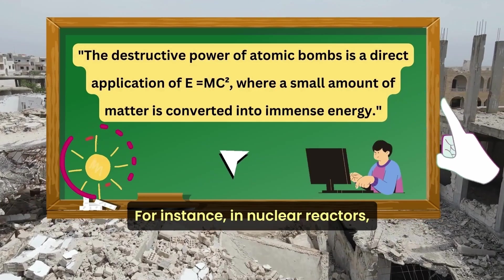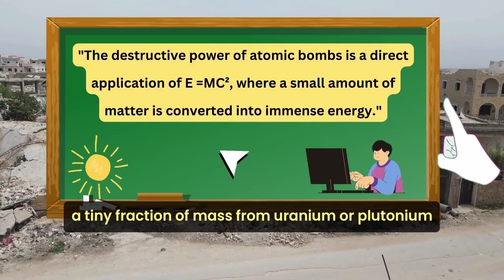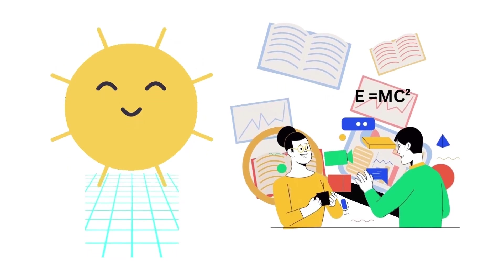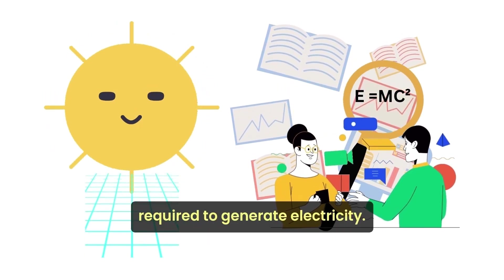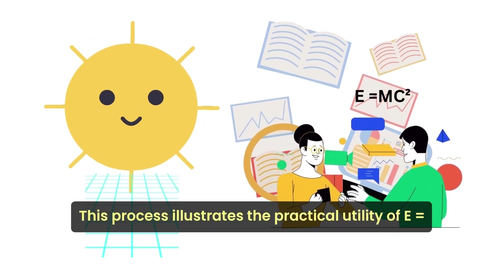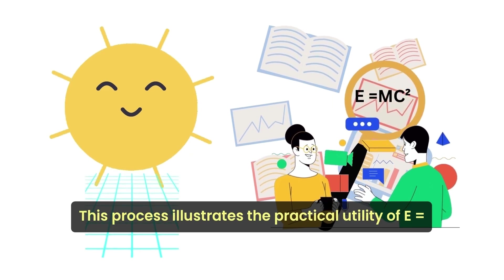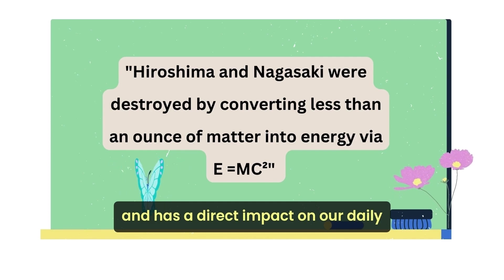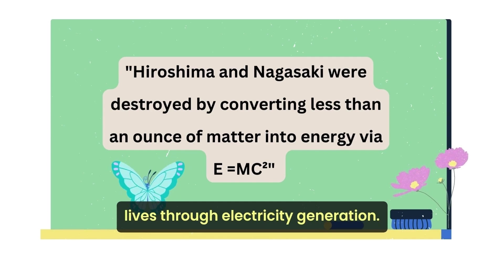For instance, in nuclear reactors, a tiny fraction of mass from uranium or plutonium is converted into energy, producing the substantial power required to generate electricity. This process illustrates the practical utility of E equals mc squared in energy production and has a direct impact on our daily lives through electricity generation.